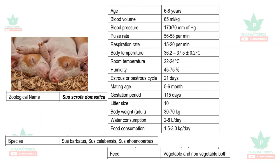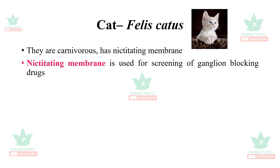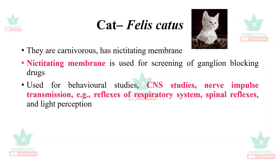The cat, Felis catus, is carnivorous and has a highly developed nictitating membrane, which is used for screening ganglion-blocking drugs. Cats are used for behavioral studies, CNS studies, nerve impulse transmission, reflexes of the respiratory system, spinal reflexes, and light perception studies. They are also used in neuropharmacological research.